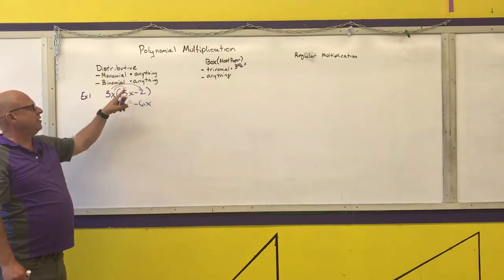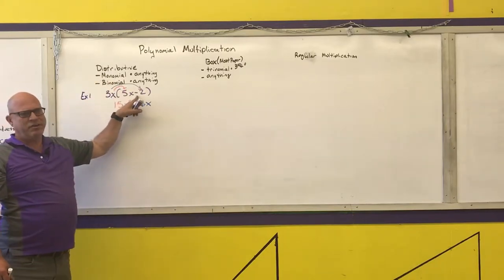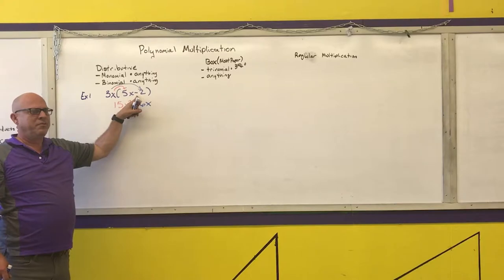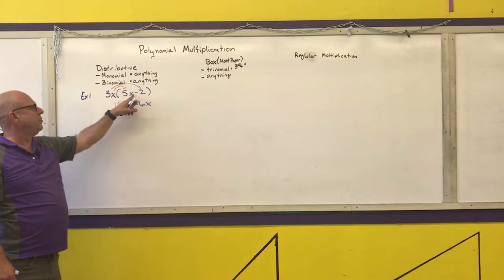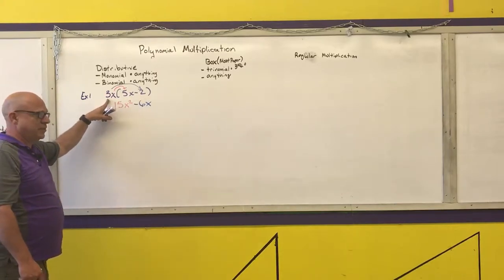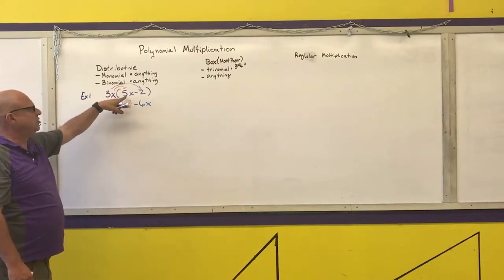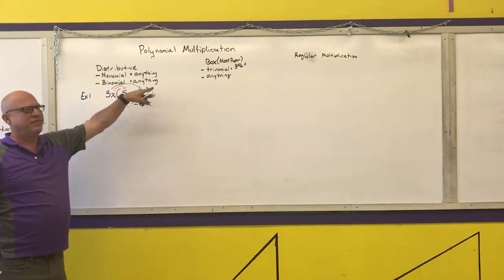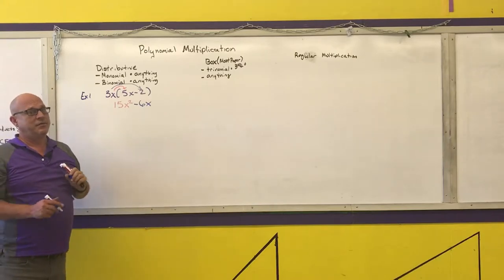That's a monomial times anything — this could have been a trinomial, a four-term polynomial, or a five-term polynomial. The term outside the parentheses needs to distribute to everything inside the parentheses.